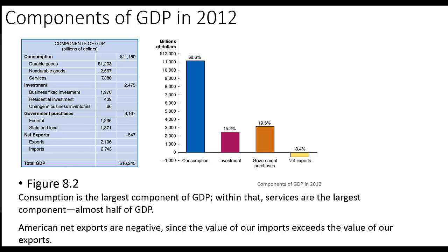Looking at the investment category, business fixed investment is the largest component of investment spending and tends to be the most volatile of all spending categories. A decline in business fixed investment played a large role in the 2007–2009 recession. On government purchases, it may surprise you that state and local government purchases outweigh federal purchases, but most basic government services — like education and law enforcement — occur at the state and local levels.